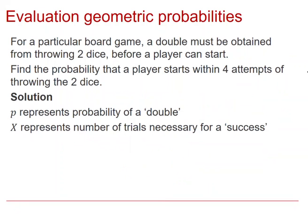Looking at a different example involving throwing a double when two dice are thrown, we are required to find the probability that a player starts the game — that is, obtains a double — within four attempts. Identifying the parameter: P equals one sixth, the probability of throwing a double.